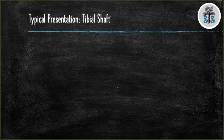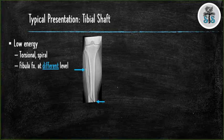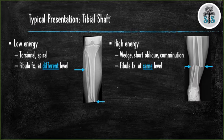The injury films can give you insight on the energy that caused the fracture. Low energy injuries are due to twisting type injuries which result in a spiral fracture. If there is a fibular fracture it will be at a different level than your tibial shaft fracture. A high energy injury will result in a tibial shaft fracture that is either short, oblique, or comminuted. If there is a fibular fracture it will be at the same level as your tibial shaft fracture.